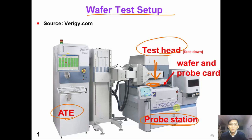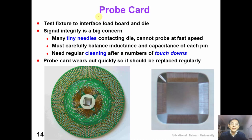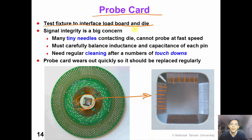Each time we test one wafer. The test head connects to the dies via a probe card. The probe card is a test fixture to interface the load board and the die. From this picture, we can see that there are many small needles in the middle of a probe card which connect to the die. Because of signal integrity problems, we cannot probe the die at fast speed. In the design of the probe card, we must carefully balance the inductance and capacitance of each needle.